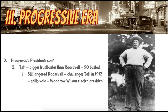In 1912, Roosevelt reappears on the scene. Taft runs as a Republican, Woodrow Wilson runs as a Democrat, and Teddy Roosevelt creates a new party called the Bull Moose Party and runs as a third party candidate. As you can imagine, Taft and Roosevelt split the vote and Woodrow Wilson becomes president.